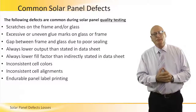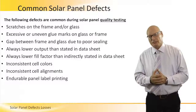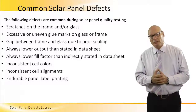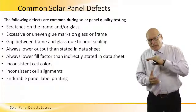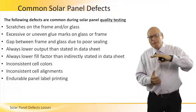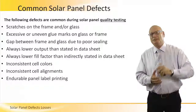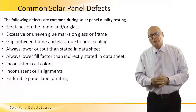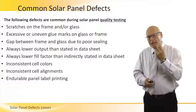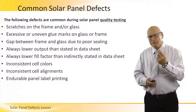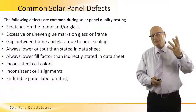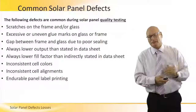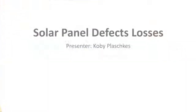Undurable panel label printing — that's the label printed on the panel itself, and that represents another loss. When we look at panel-level losses, it's a completely different set of parameters compared to cell-level losses.